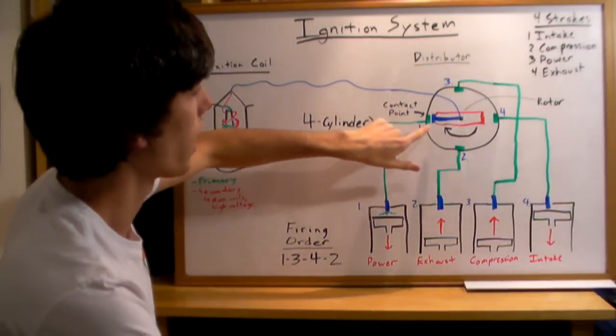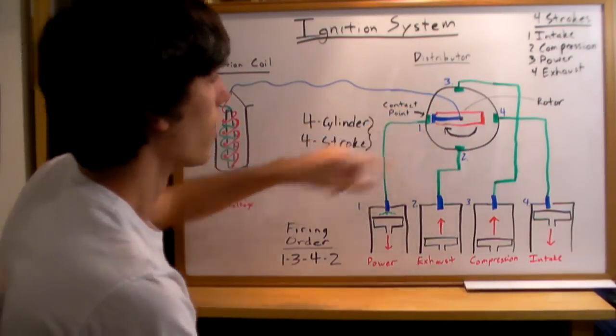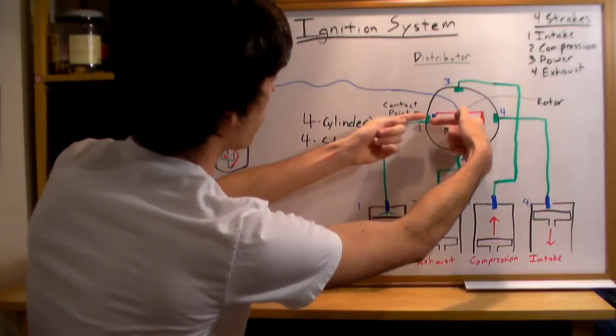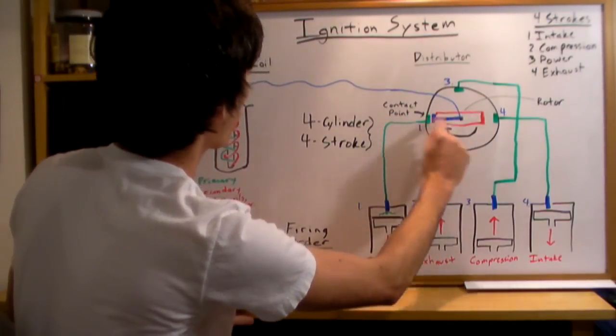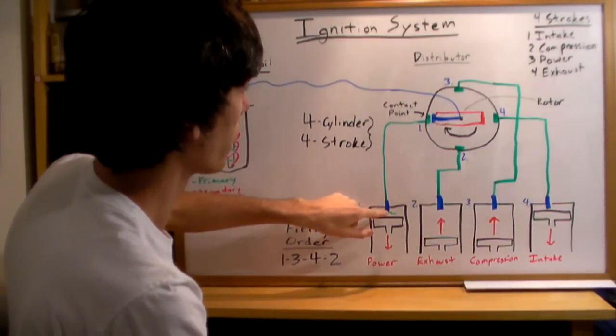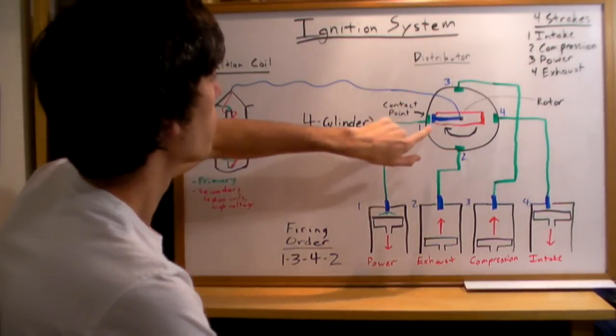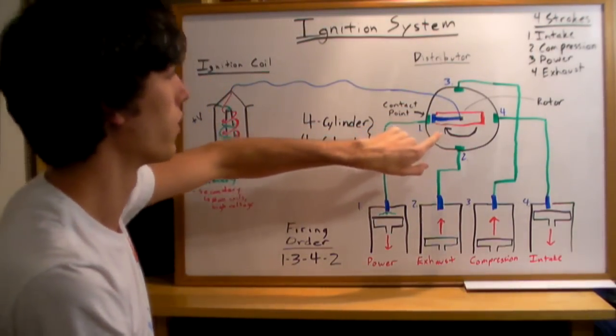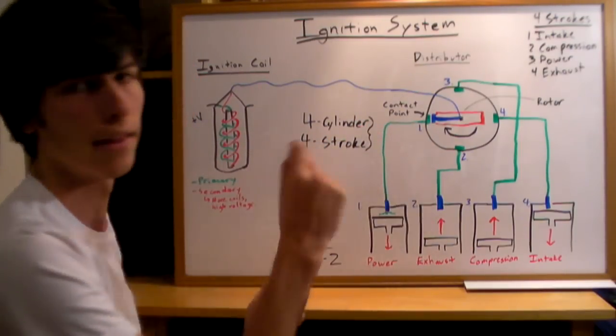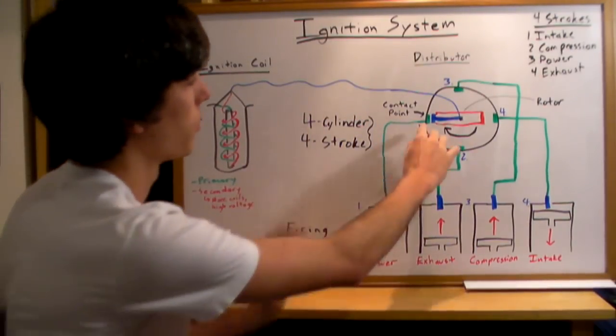Every 90 degrees, you're going to have a contact point. When the rotor is coming into contact with this contact point, it's going to pass that voltage across to the spark plug and then it will fire. One thing to note is that they're not actually in contact, they're just going to be very close and then you're going to have a spark pass between the two.